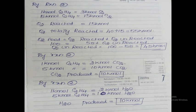From reaction 2, water produced: 1 kilomole of ethylene produces 2 kilomoles of water. In reaction 2, 5 kilomoles of ethylene reacted. So water produced = 5 × (2/1) = 10 kilomoles.